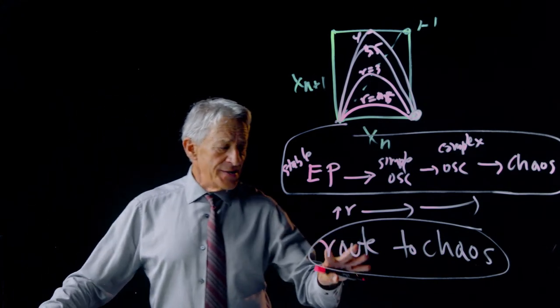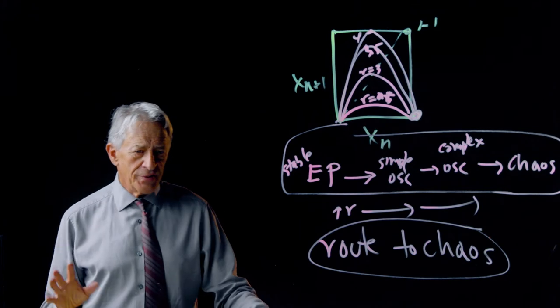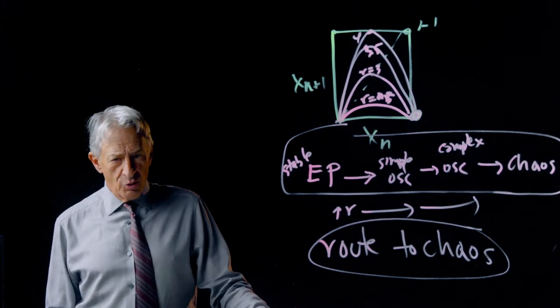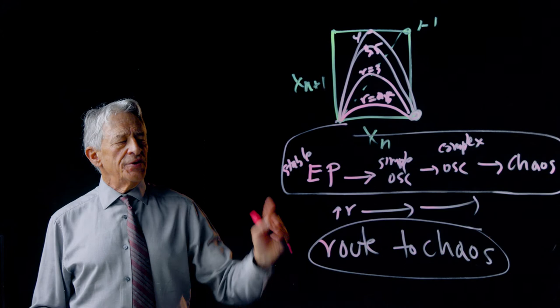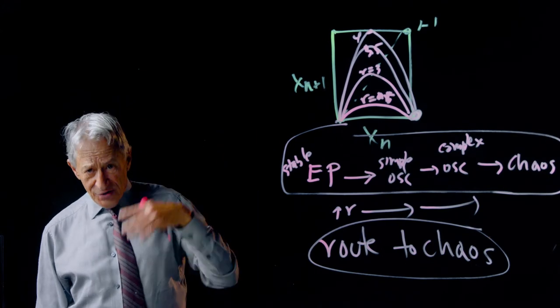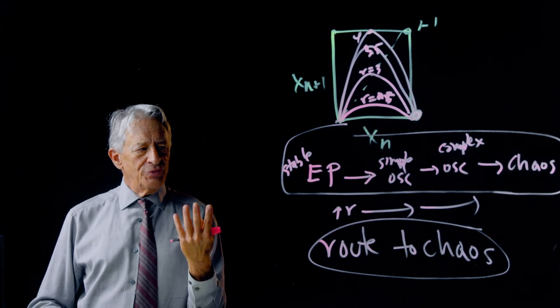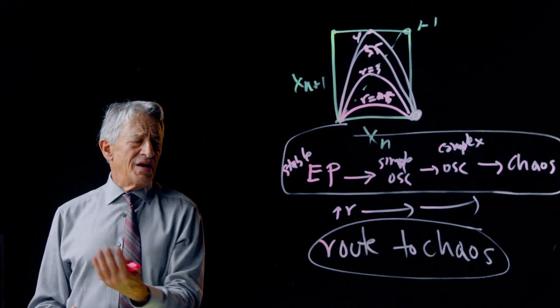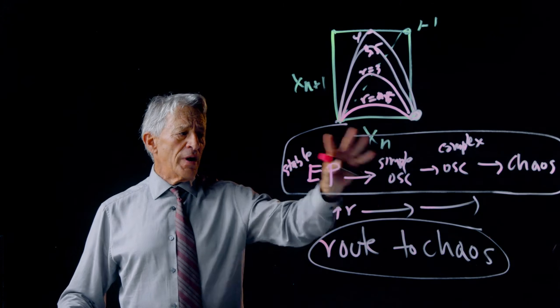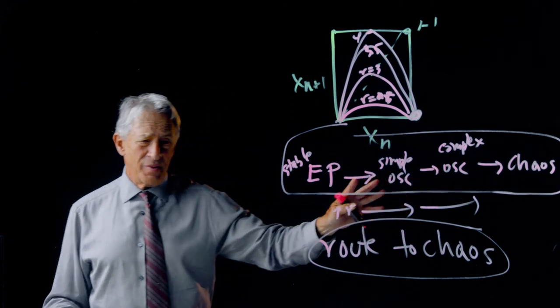So this existence of a route to chaos is really very fundamental and important because it says that systems on their way to chaos go through definite waystations and the waystations get more and more complex in terms of their behavior.